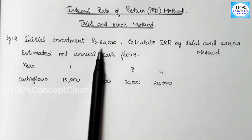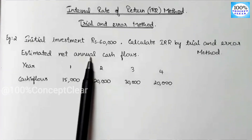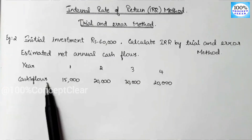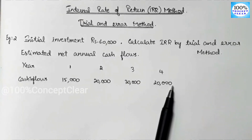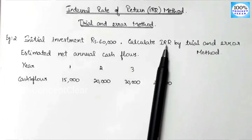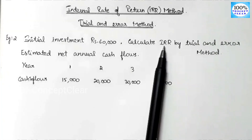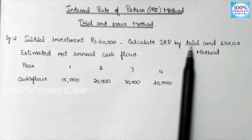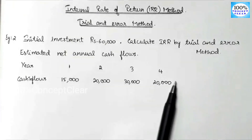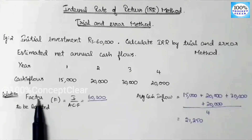In this video, we will explain with an initial investment of 60,000. We have estimated net annual cash flows — cash flows over 4 years. Calculate IRR by Trial and Error method. So we will explain the IRR calculated using the trial and error method.